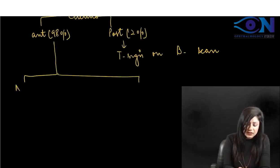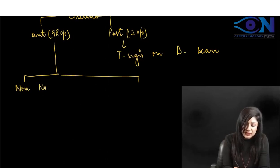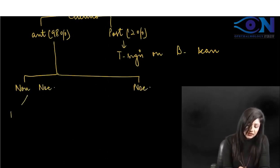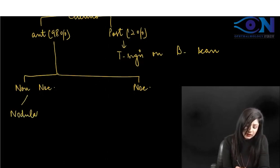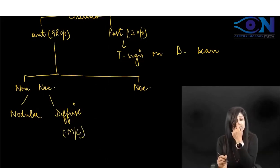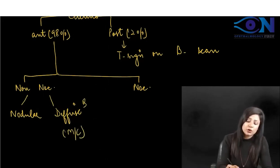It can be non-necrotizing or necrotizing. Non-necrotizing can be nodular or diffuse. The diffuse type is most common - diffuse non-necrotizing anterior scleritis is most common.